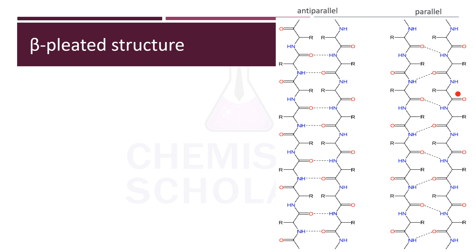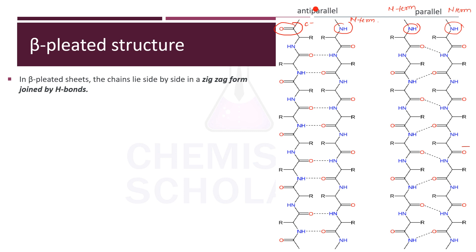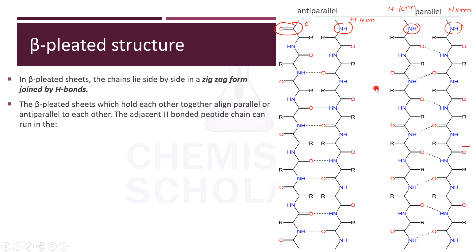In the beta-pleated structure, there are anti-parallel and parallel arrangements. If both N-terminals of two chains face each other, it is called parallel. If the N-terminal of one chain faces the C-terminal of another, it is called anti-parallel. In the beta-pleated sheets, the chains lie side by side in a zigzag form, and hydrogen bonds between the two chains increase stability, keeping them fixed in that structure.